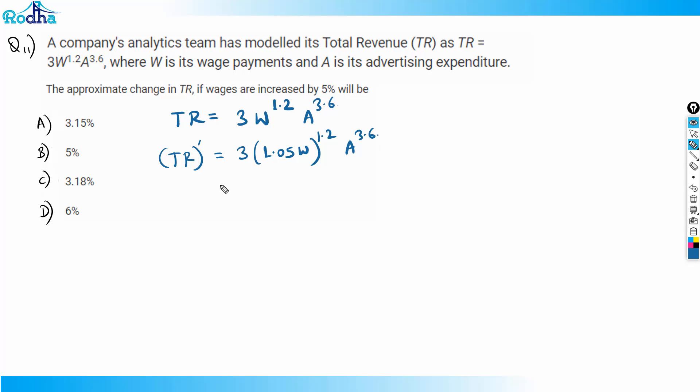Now, in this kind of question, always have a look and keep an eye on options. Very important. Now, just always try to relate to old TR. If I factor here, I can see this is actually 1.05 to the power 1.2, and if I separate this out...